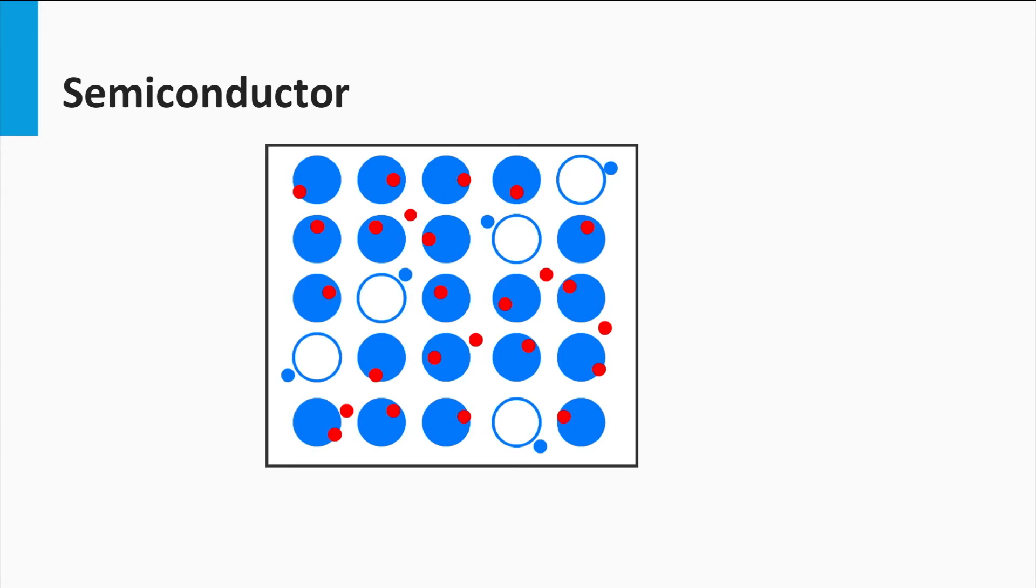Semiconductors are materials which have a conductivity between that of a metal and insulator. The outer electrons of the atoms are more strongly bound to the background atoms than in metals, but under certain conditions some of the electrons can leave their background atoms and become freely mobile electrons as well. These few electrons that are separated from its atoms leave a positively charged entity behind. This positively charged entity is called a hole. The small blue dots in the illustration represent the holes.